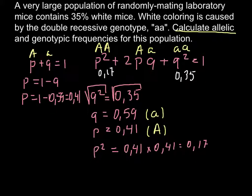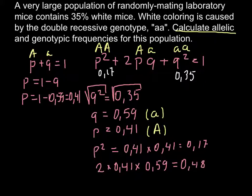The last thing we have to calculate is the frequency of the heterozygous: 2pq = 2 × 0.41 × 0.59 = 0.48. So the frequency is 0.48.